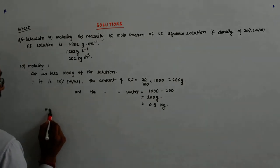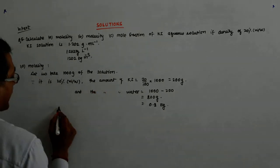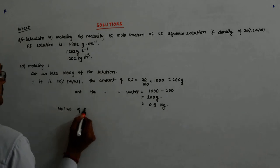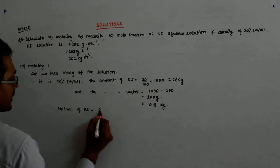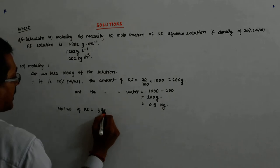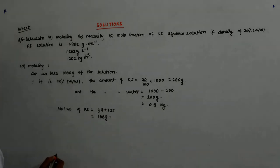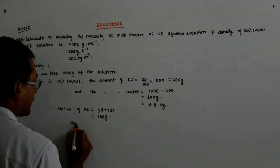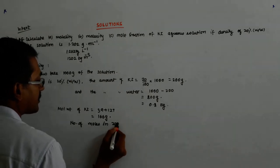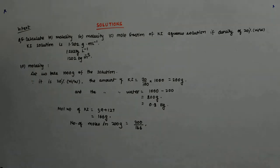Now for molality I have to have the number of moles of KI. So molecular weight of KI: K is 39 and I is 127, so that is 166 grams. Number of moles in 200 grams is equal to 200 divided by 166.